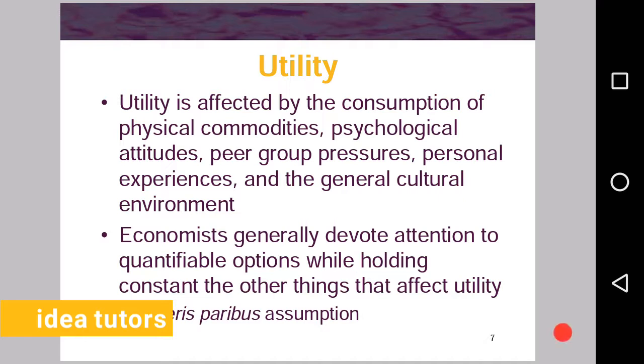Economists generally devote attention to quantifiable options only, the measurable ones, while holding constant the other things that affect utility. So economists don't consider them; they consider those as constant and devote attention to quantifiable ones. This is ceteris paribus assumption.